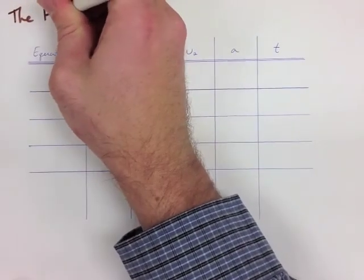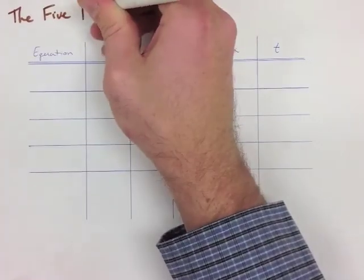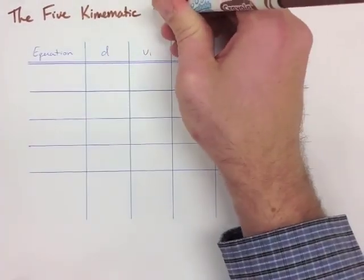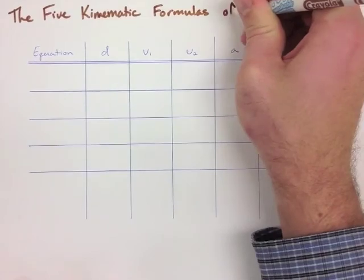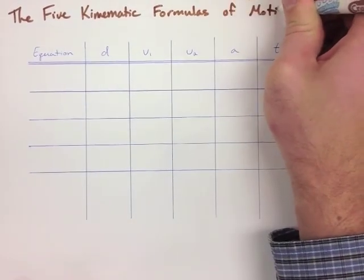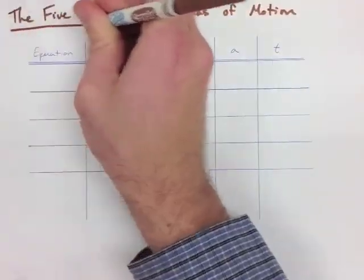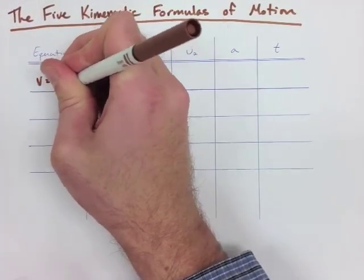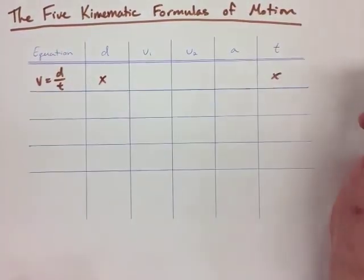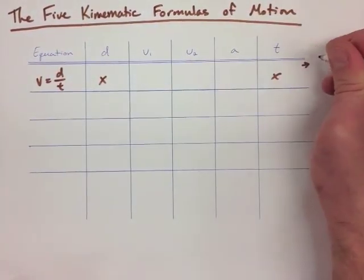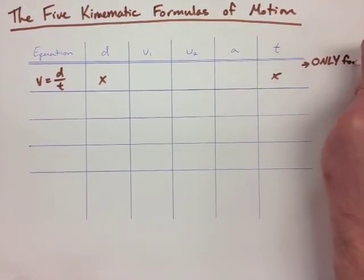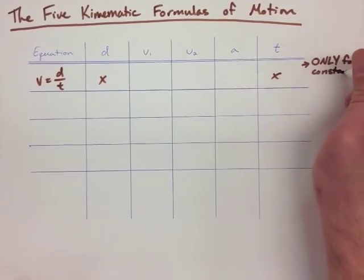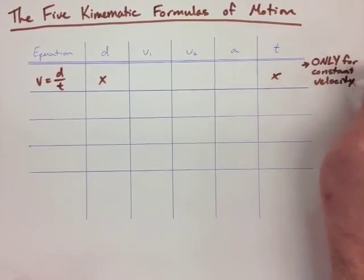In class today, we derived the 5 motion formulas and where they come from. We're now going to look at the chart as it sets all the formulas up and shows us when we're able to use them. The first formula is V equals D over T. It only contains distance and time — it also has velocity, but it's only for constant velocity.